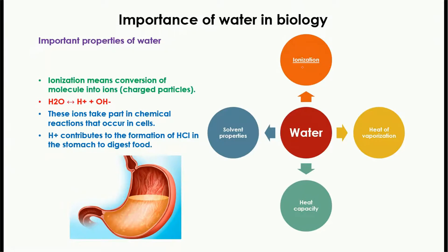Another important property of water is ionization — the conversion of molecules into ions. Ions are charged particles with positive or negative charge. When water ionizes, it forms H⁺ (hydrogen ion) and OH⁻ (hydroxyl ion). These ions are very important because they take part in chemical reactions occurring in the cell.